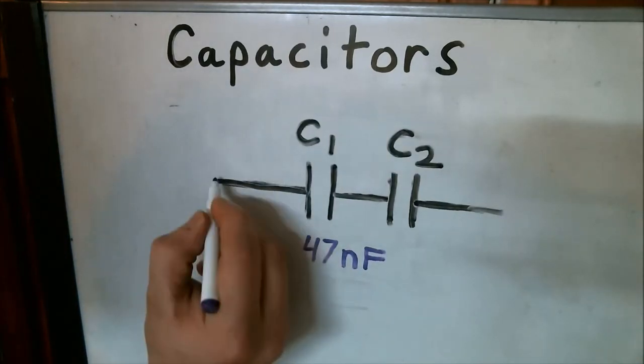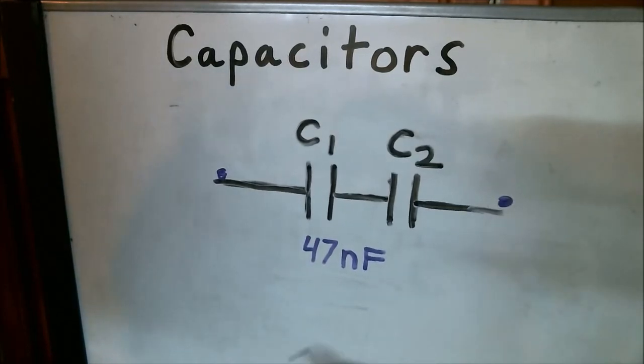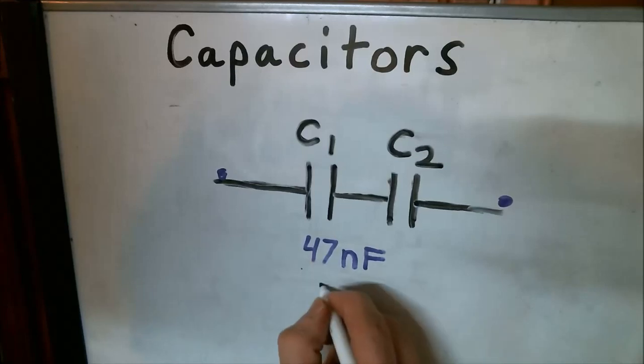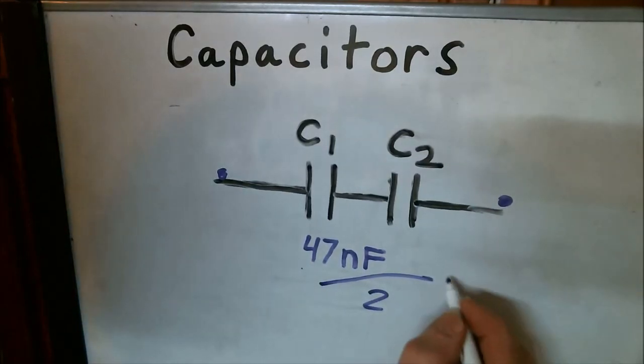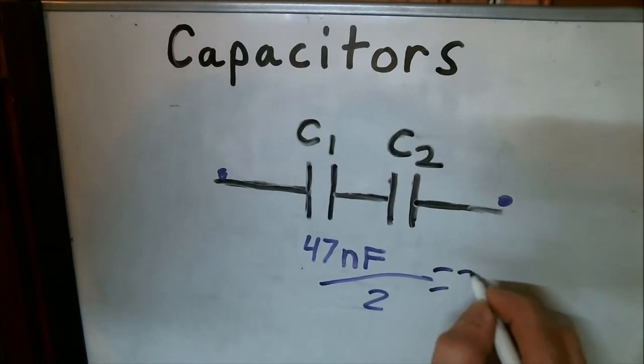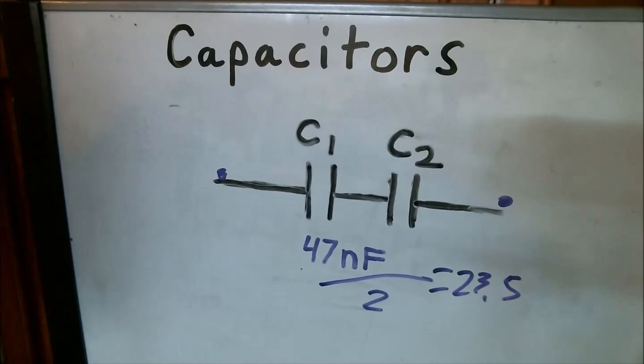Now, if I were to take a meter to measure the capacitance from point here to point here, the value would be 47 divided by 2. So we'd be left with 23.5 nanofarads. Now let's go measure that on the bench just so you know I'm not lying.